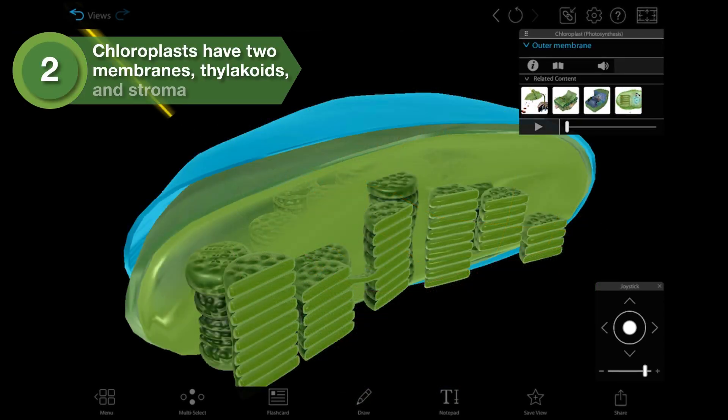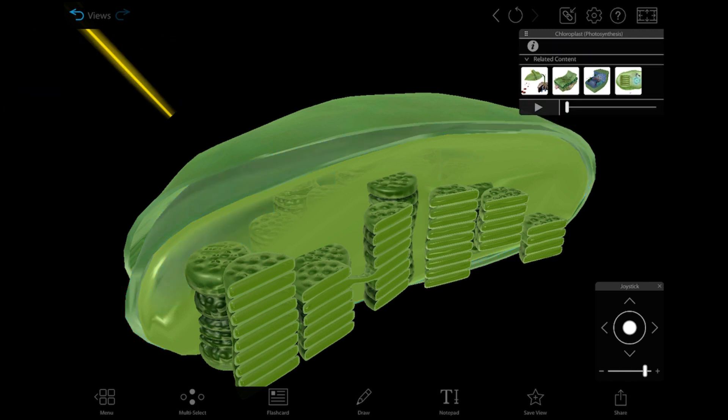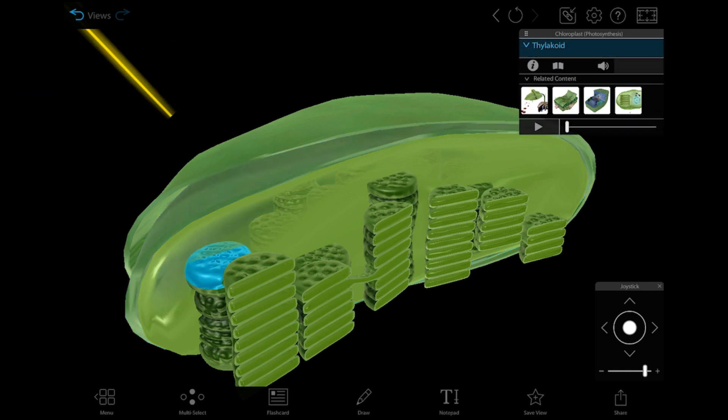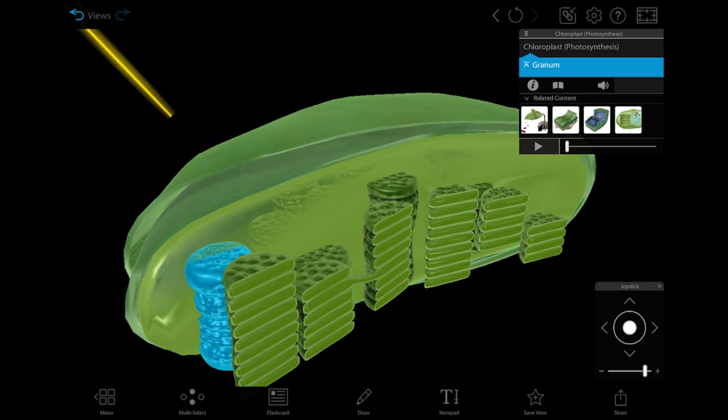Each chloroplast is surrounded by two membranes and contains its own DNA and ribosomes. Inside, there are stacks of disc-shaped thylakoids. Each stack is called a granum. The space between the grana and the inner membrane is filled with a thick fluid called stroma.